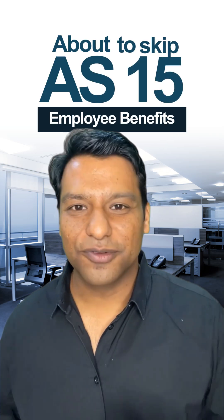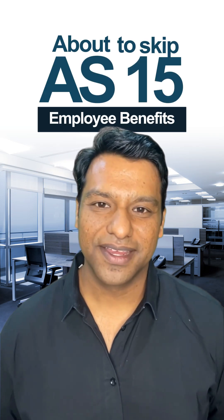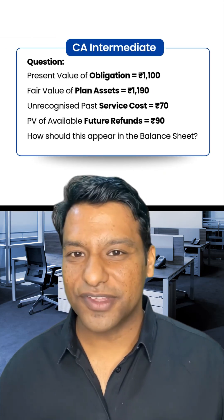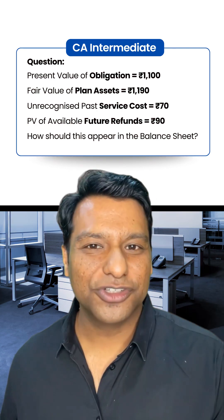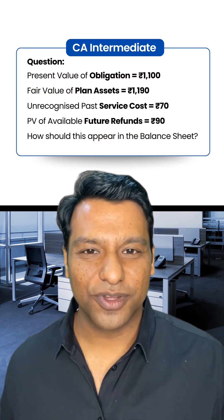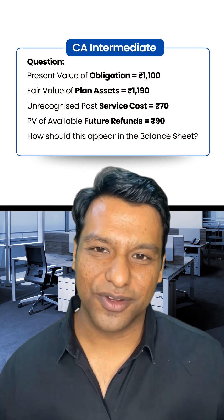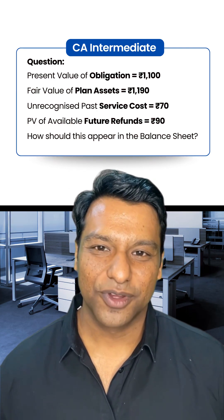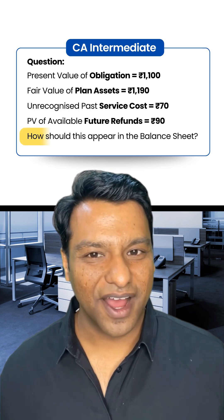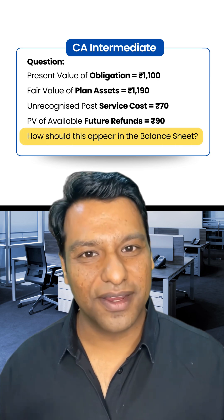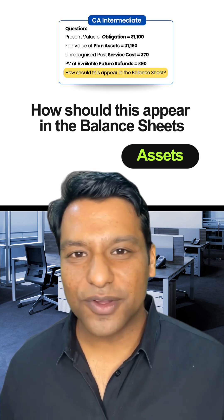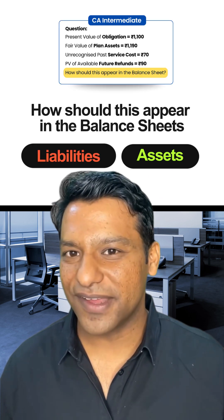About to skip AS15? Wait, let me explain the most important part of the chapter in just 60 seconds with an example. As you can see, the demand of the question is: how should this appear in the balance sheet — as an asset or as a liability?